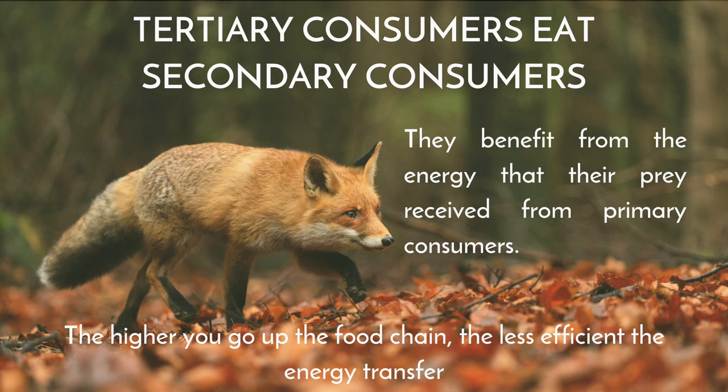In some cases, animals can count in more than one category. Our fox, for example, is considered a secondary consumer if it ate a rabbit that only eats plants, but it's a tertiary consumer if it eats a bird that ate a bug that ate a plant. One important thing to remember is that the higher you go up the food chain, the less efficient the energy transfer. This means tertiary consumers need to eat more to get the same amount of energy from their food.